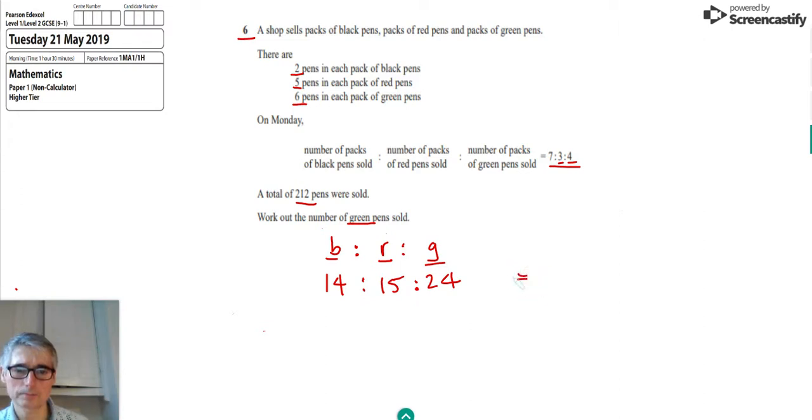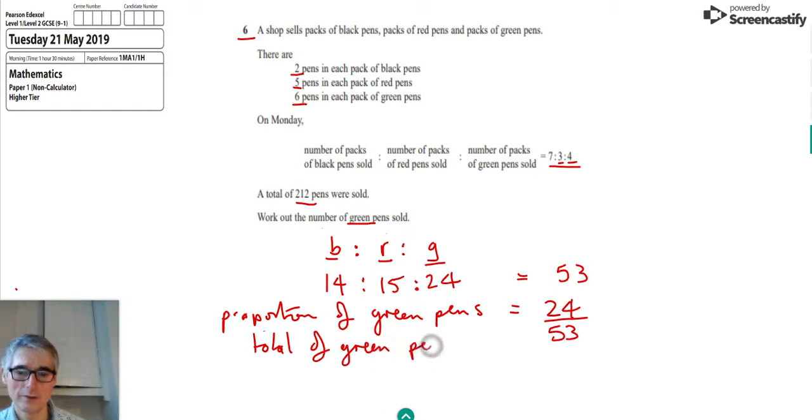So if we add that ratio up, we get that we've got 14 plus 15 is 29, plus 24 makes 53. So the proportion of pens that have been sold that were green, or the fraction of green pens, is actually 24 out of 53 of the pens were green pens. Now if we're told that we sold 212 pens in total, then the total number of green pens is given by this fraction, 24 over 53, times by 212.